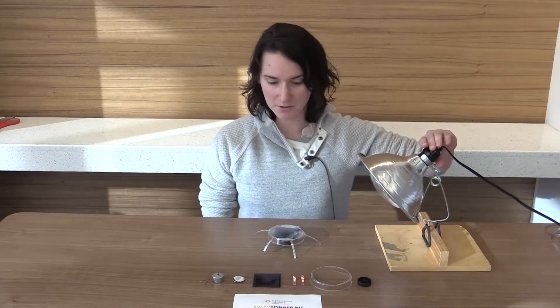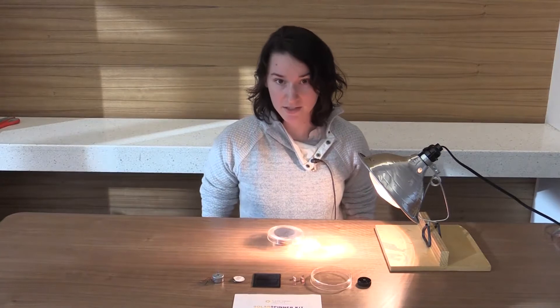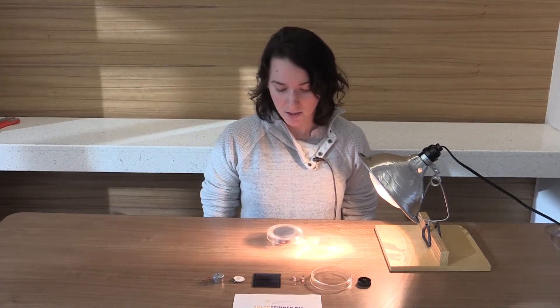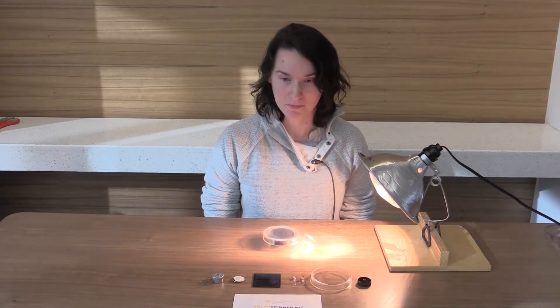Today we're going to be building some solar spinners using your solar spinner kit. The idea is that these will spin when we introduce a light source, ideally the sun, but strong enough lamps will also work.